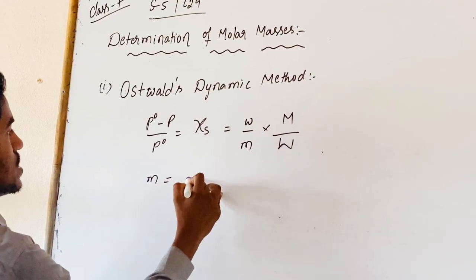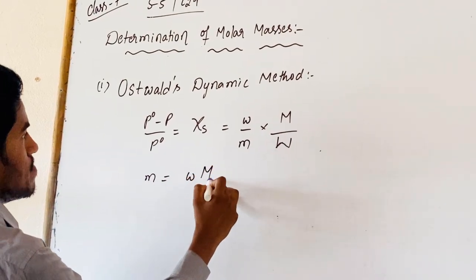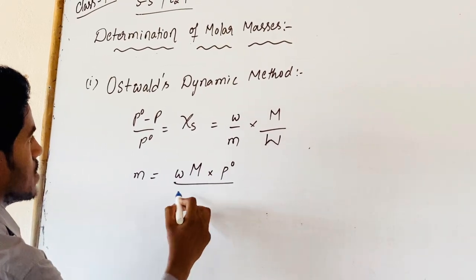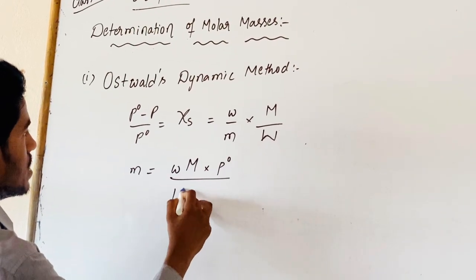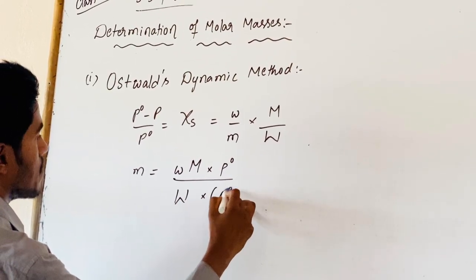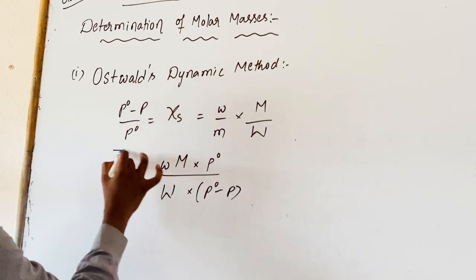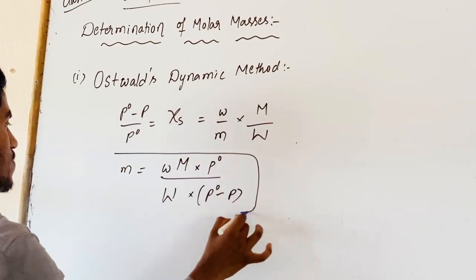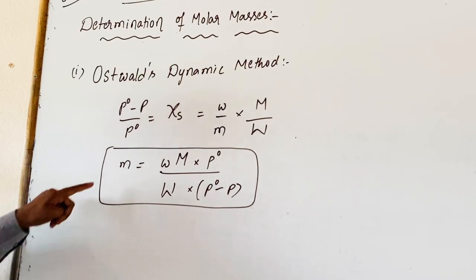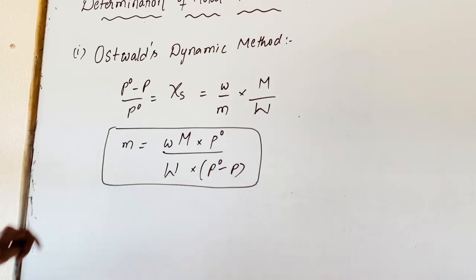From this, we can write: M equals small w times M into P-naught, divided by capital W into (P-naught minus P). By this equation, we are able to calculate the molecular mass of a non-volatile solute.